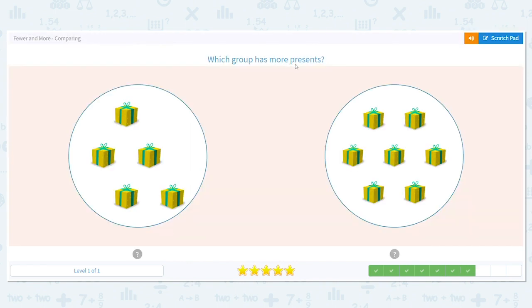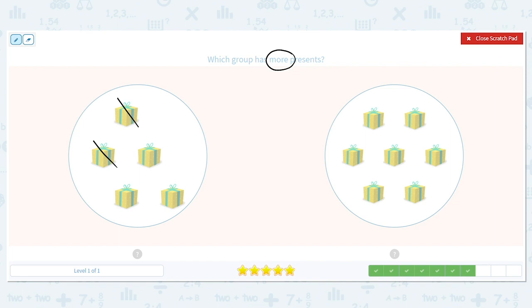Next one, which group has more presents? They do look close. So I want to count this time to be sure. All right, I'm going to cross off. Remember, we're going for more, but let's cross off as we count. You count out loud as I cross off. Go ahead. Five. Nice job.